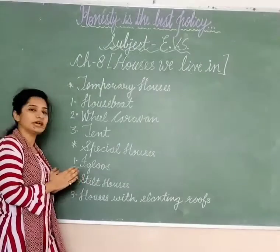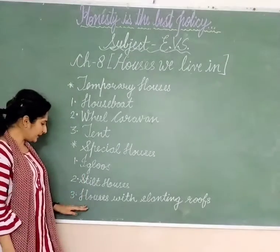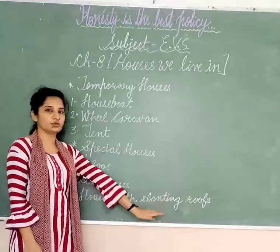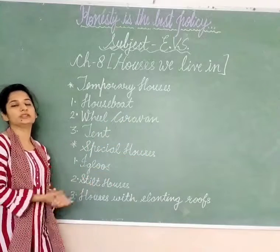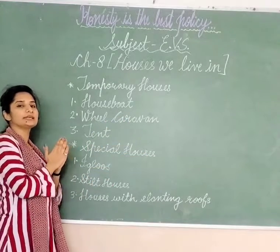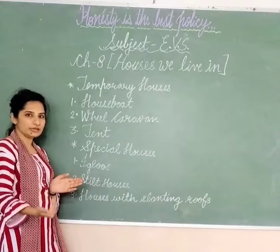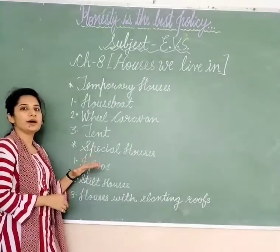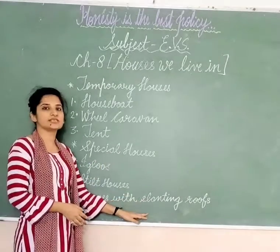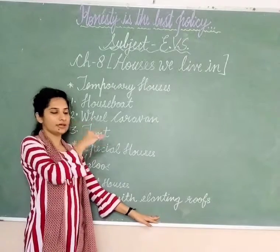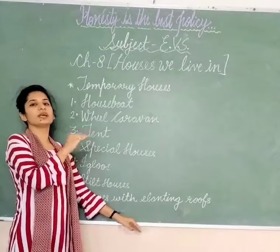These stilt houses are mostly made of wood. Next are houses with slanting roofs. Some houses have slanting roofs. The roofs are slanting so that snow can slide off the ground level and the house stays safe.